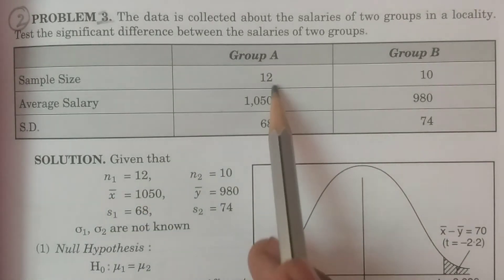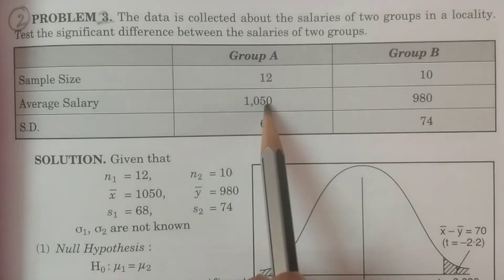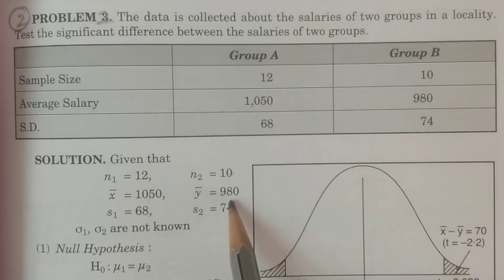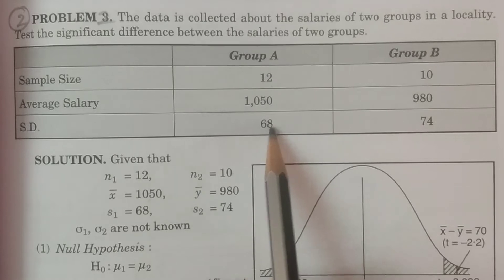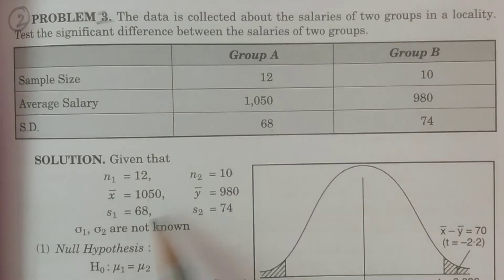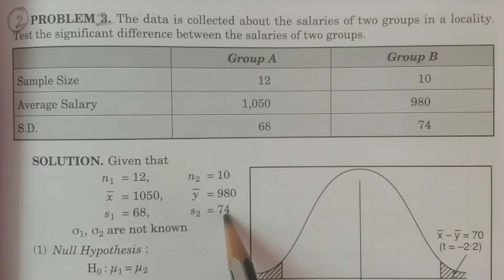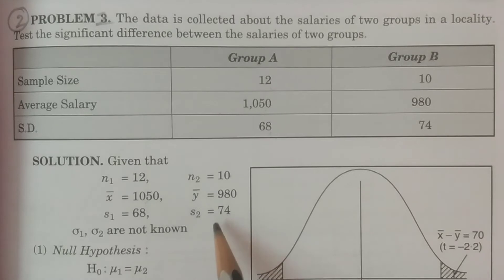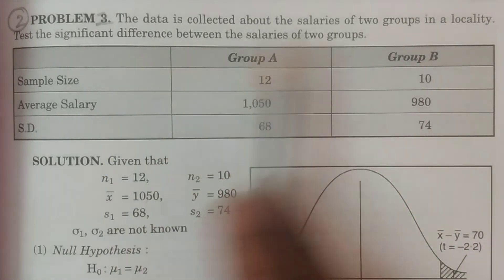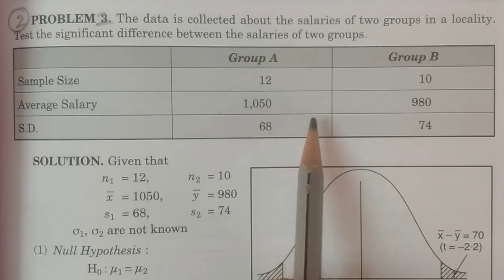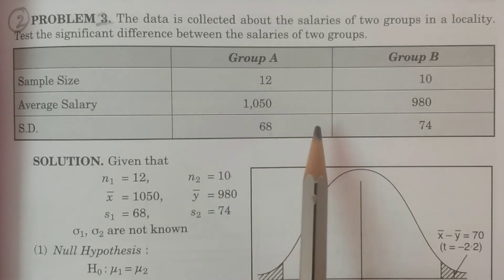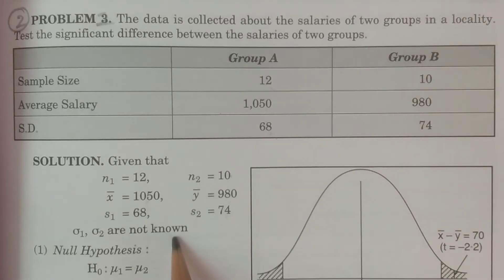The given data: n1 = 12, n2 = 10, x̄ = 1050, ȳ = 980, s1 (sample standard deviation for first sample) = 68, s2 = 74. This is all the data given in the problem — no other value is given. Therefore you can easily observe that this is the case where sigma is not known; that is, sigma 1 and sigma 2 are not known.